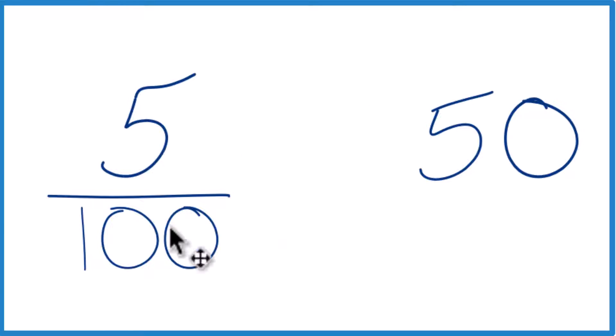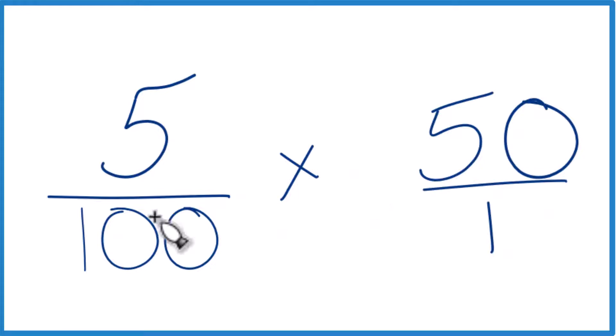And the 'of', you can think of that as multiplication. So we're multiplying 5 over 100 times 50. Let's call this 50 over 1, just so everything lines up. It's still 50.